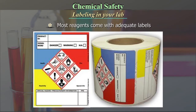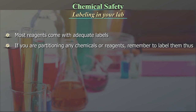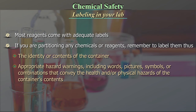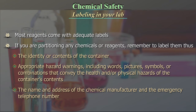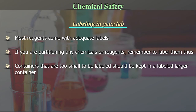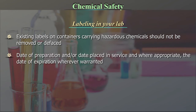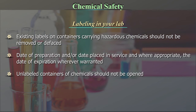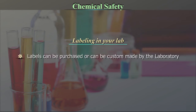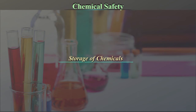Labeling in your lab: Most reagents come with adequate labels. If you are partitioning any chemicals or reagents, remember to label them with: (1) the identity or contents of that container; (2) appropriate hazard warnings including words, pictures, symbols, or combinations that convey the health and/or physical hazards of the container's contents; (3) the name and address of the chemical manufacturer and the emergency telephone number; (4) containers that are too small to be labelled should be kept in a larger labelled container; (5) existing labels on containers carrying hazardous chemicals should not be removed or defaced.